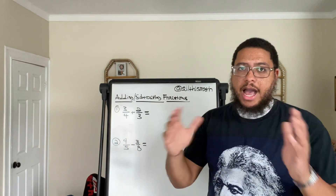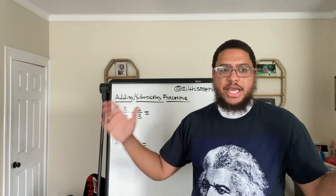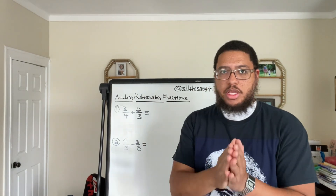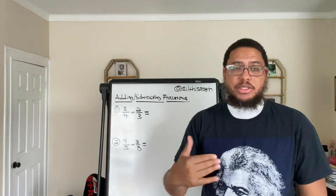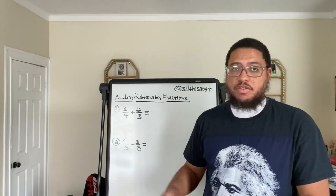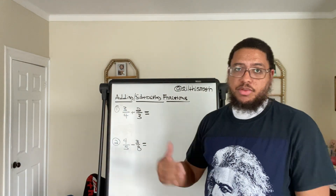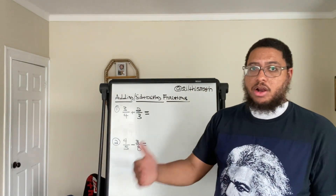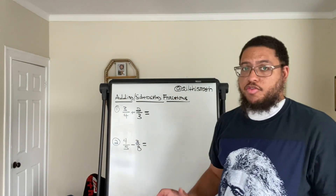3/4 means you take an object — a group of people, anything — and divide it up into four equal pieces. Notice I said divide it up, because a fraction also represents the operation of division. You divide it into four equal pieces and we are focused on three — either three pieces of the pie got eaten, or three pieces are left. That's 3 out of 4, or 3/4.